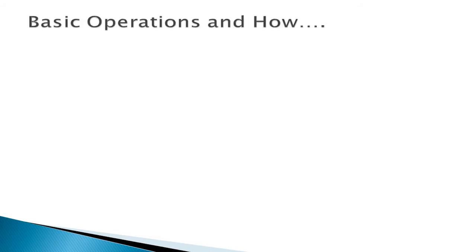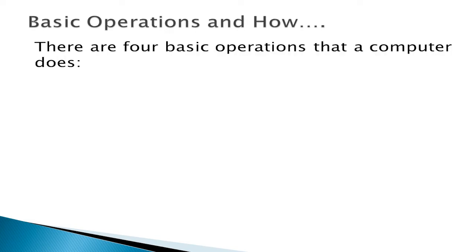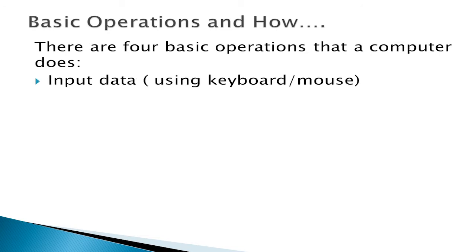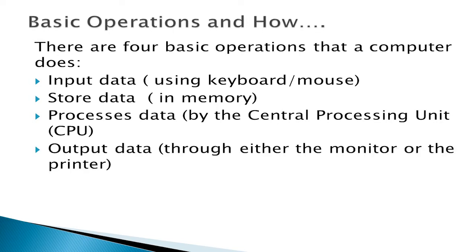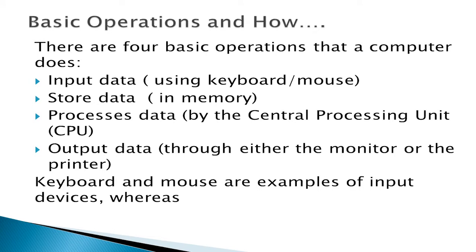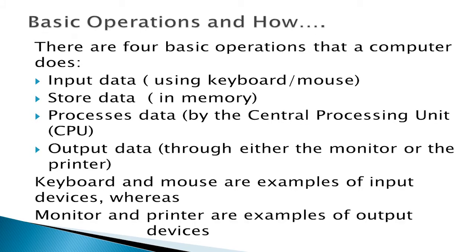What a computer does and how the operations by the components are performed: input data using a keyboard and a mouse; store data in the memory; process data by the central processing unit; and output data either through the monitor or the printer. The keyboard and mouse are examples of input devices, whereas the monitor and printer are examples of output devices.